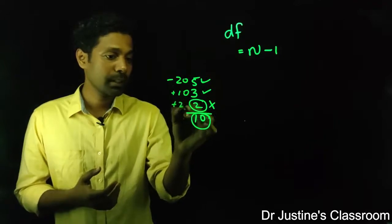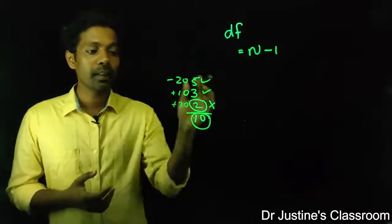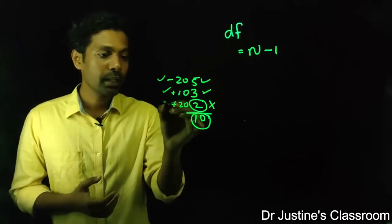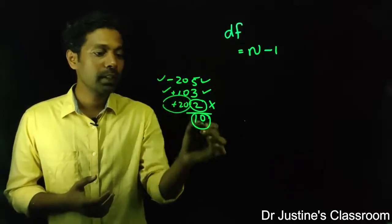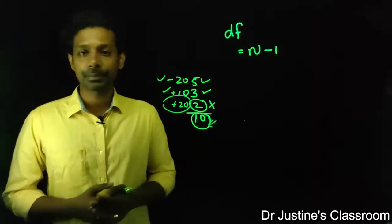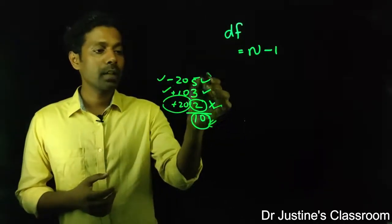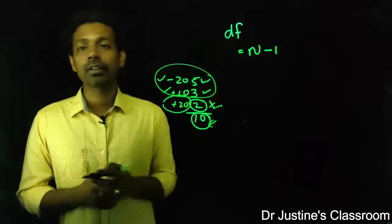If you add that, you will get 10. So whatever may be these two values, you can adjust the last value so that the end product will be the same. Take out the freedom of one observation and other values can vary in its own way. This is called degree of freedom.